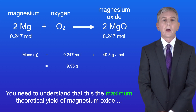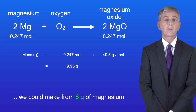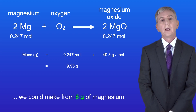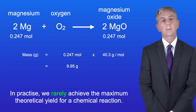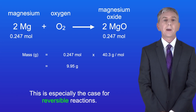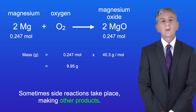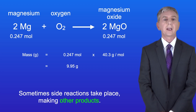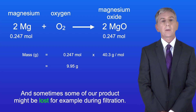This is the maximum theoretical yield of magnesium oxide we could make from 6 grams of magnesium. In practice we rarely achieve the maximum theoretical yield for a chemical reaction. For example, not all of the reactant may react — this is especially the case for reversible reactions. Sometimes side reactions take place making other products. And sometimes some of our product might be lost, for example during filtration.